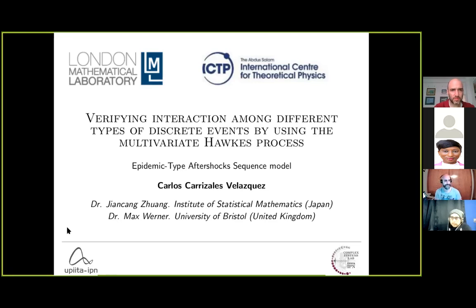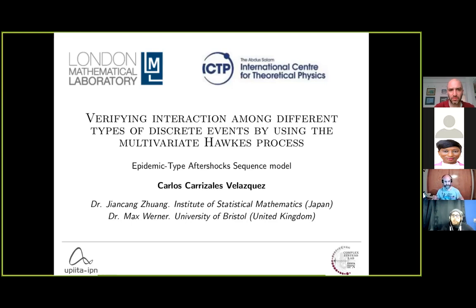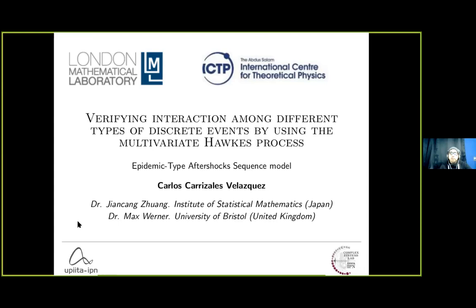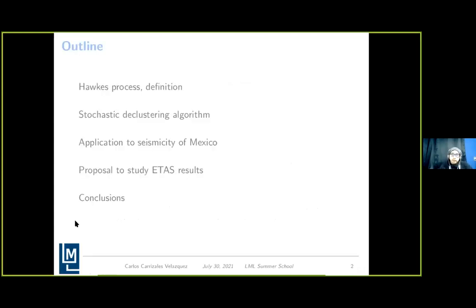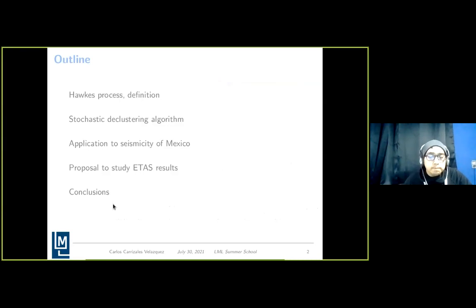Thank you. My project is number 10: verifying interaction among different types of discrete events by using the multivariate Hawkes process. In particular, we will focus on the Epidemic Type Aftershock Sequence (ETAS) model, which is a kind of Hawkes process. This is the agenda — let me start.